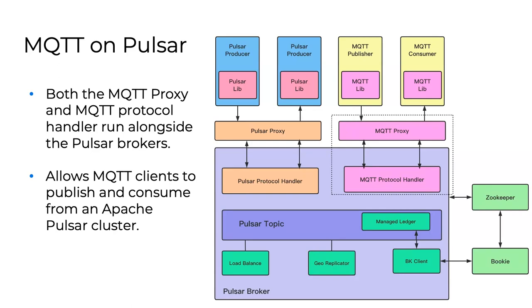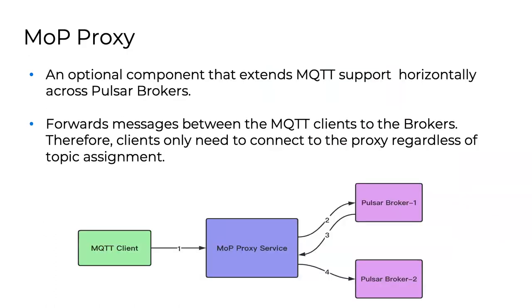MQTT libraries out there can publish data to Pulsar without knowing it's a Pulsar topic underneath. It goes over TCP, over the MQTT network transport protocol, and comes right into Pulsar. Similarly, the proxy in front means you don't have to worry about reliability — if the broker behind the scene goes down, the proxy automatically maps you over to another broker, reconnects, and monitors that regardless of topic assignment.